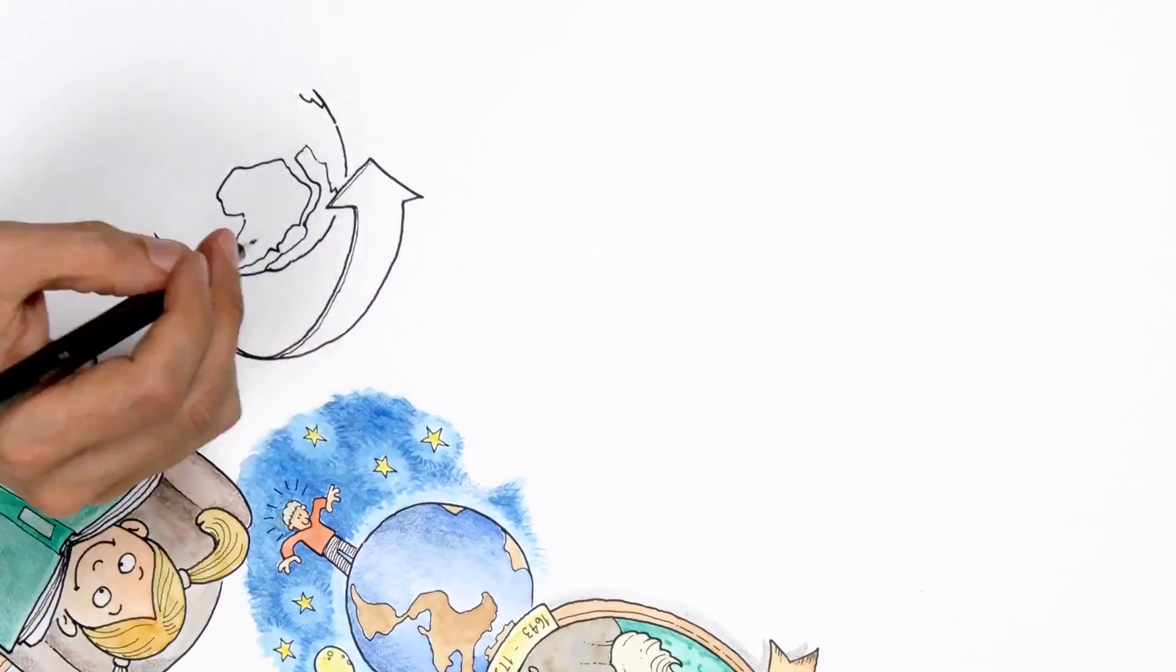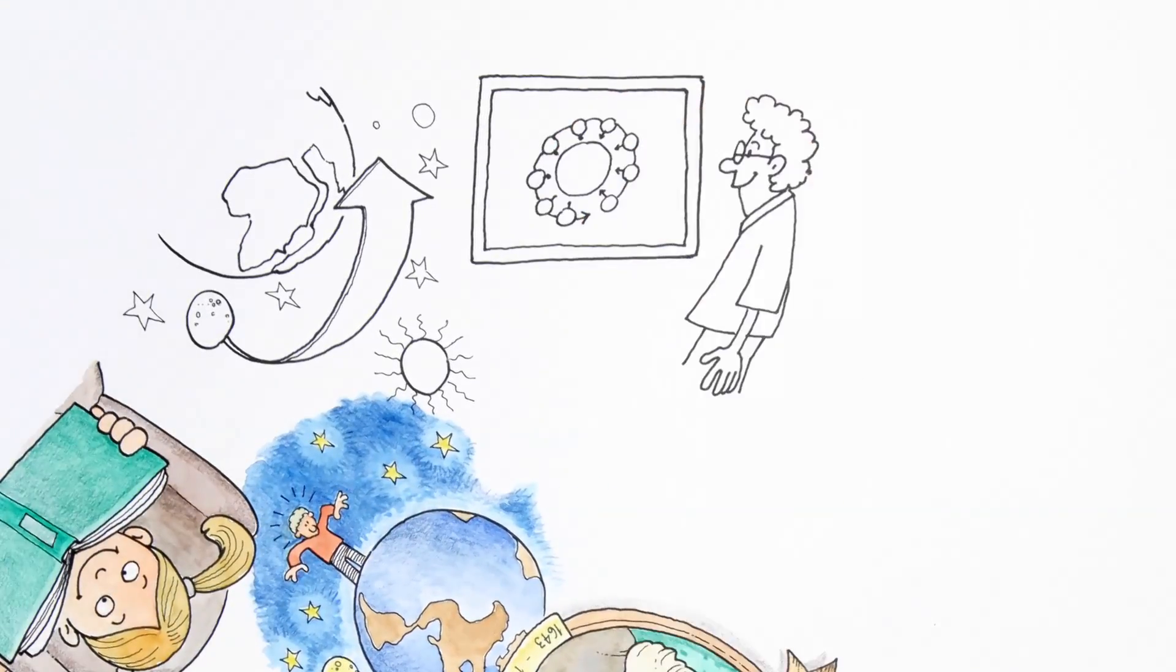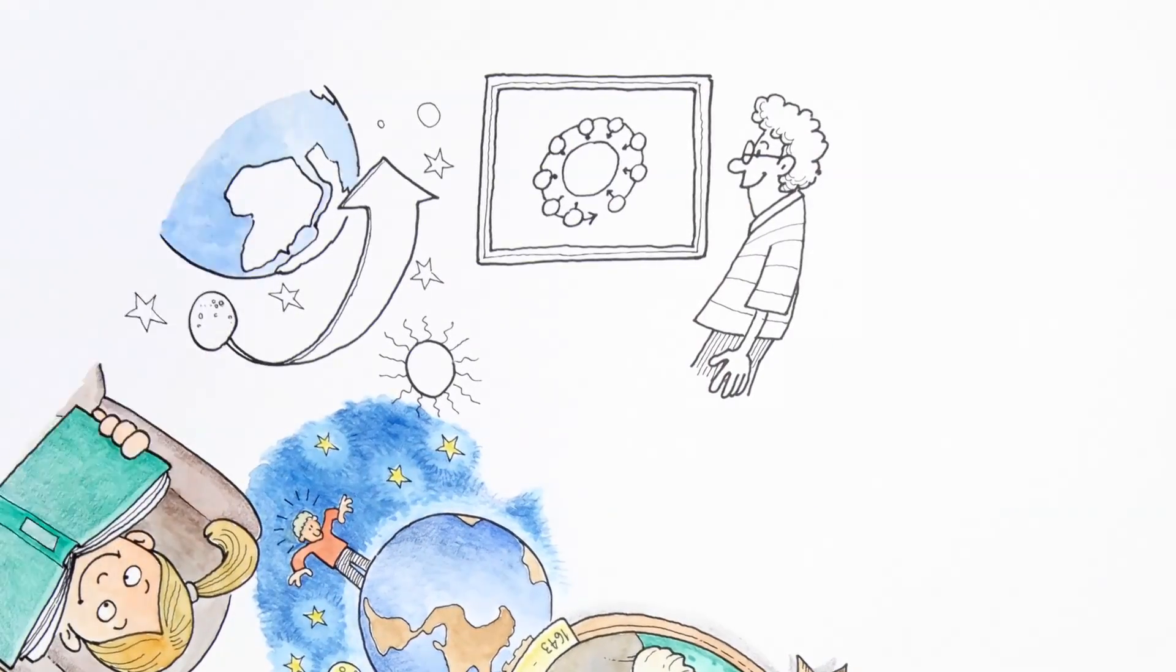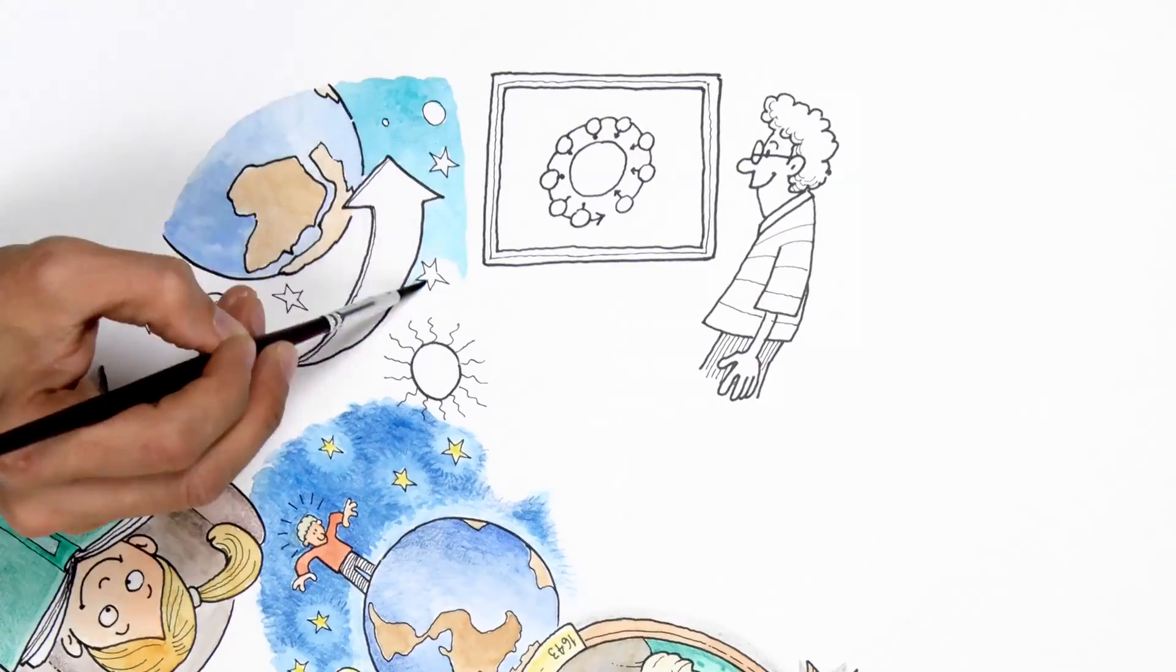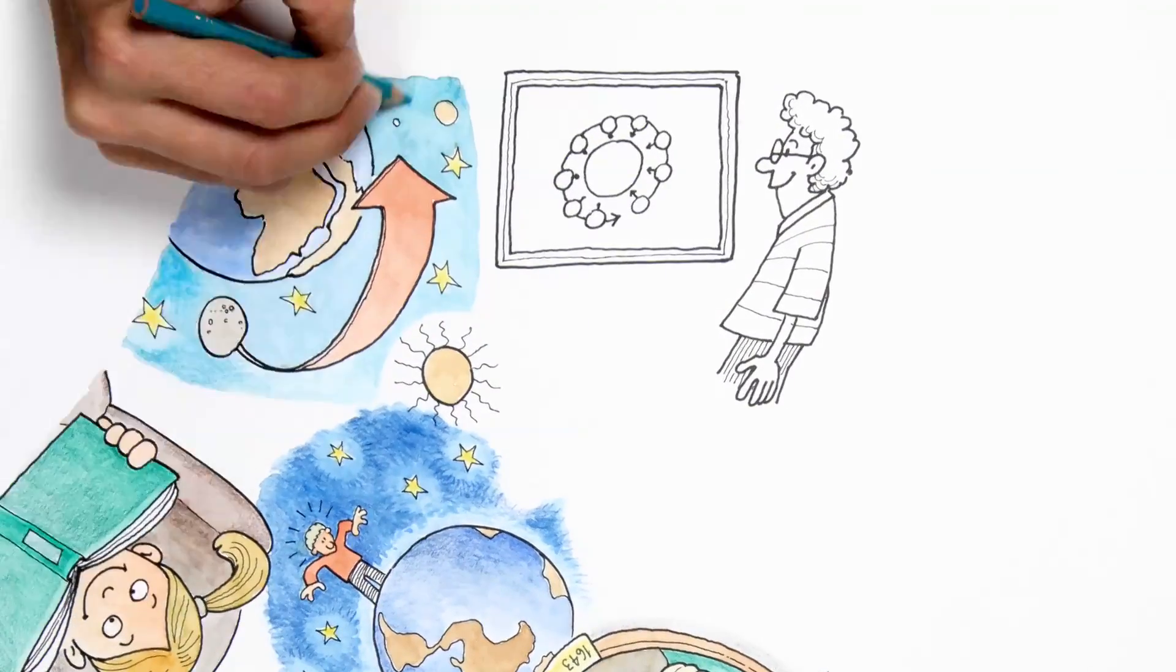But what about the moon? It spins around the Earth, but why doesn't it fall onto Earth? Well, in fact, the moon is actually falling, but the difference in this case is not only gravity, but the speed with which it travels through space.